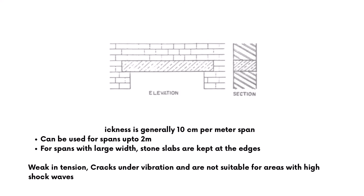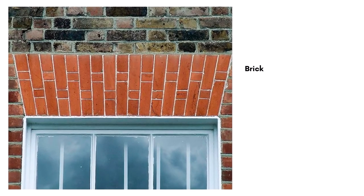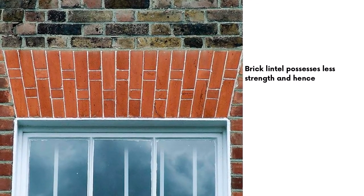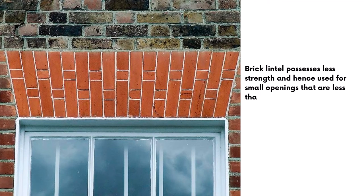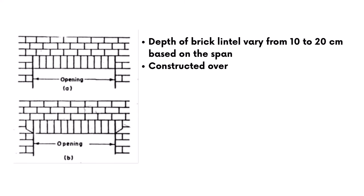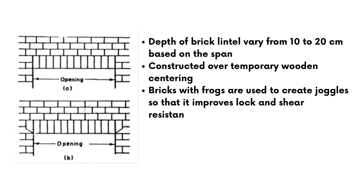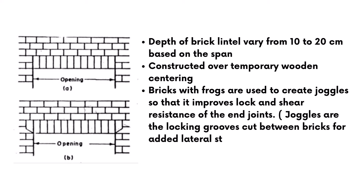Brick lintels possess less strength and hence are used for small openings — less than 1 meter — subjected to lower loads. The depth of a brick lintel varies from 10 to 20 cm based on the span. They are constructed over temporary wooden centering. Bricks with frogs are used to create joggles so that it improves the lock and shear resistance of the end joints. Such lintels are also called joggle brick lintels. Joggles are the locking grooves cut between bricks for adding lateral strength and better bond.